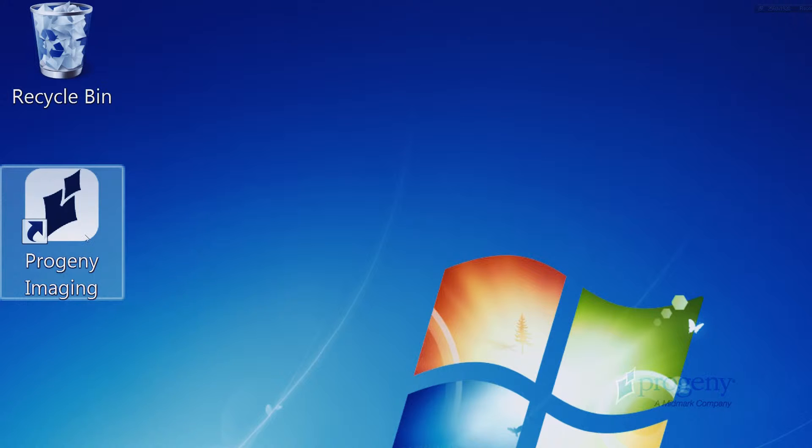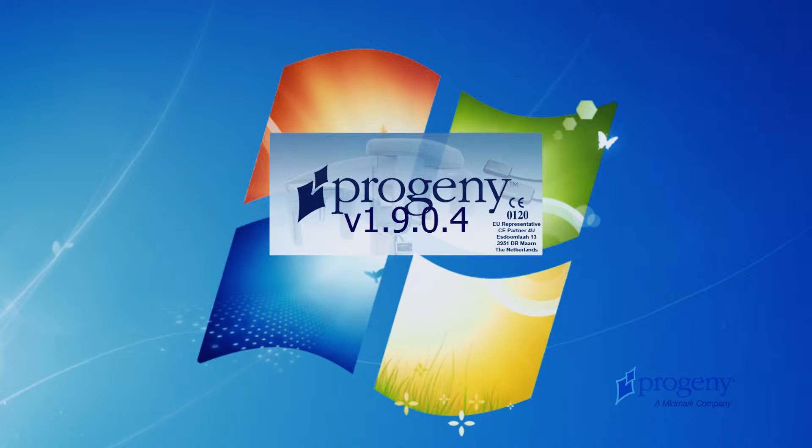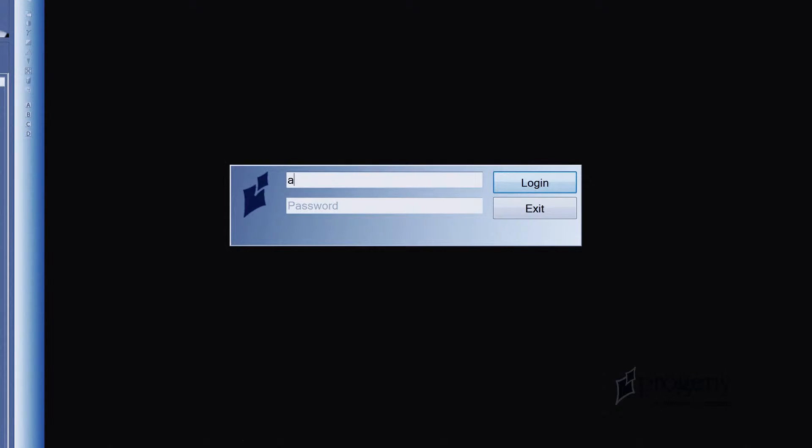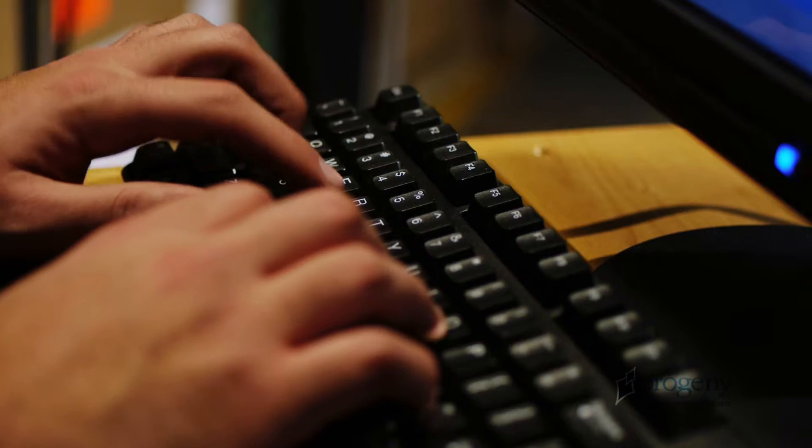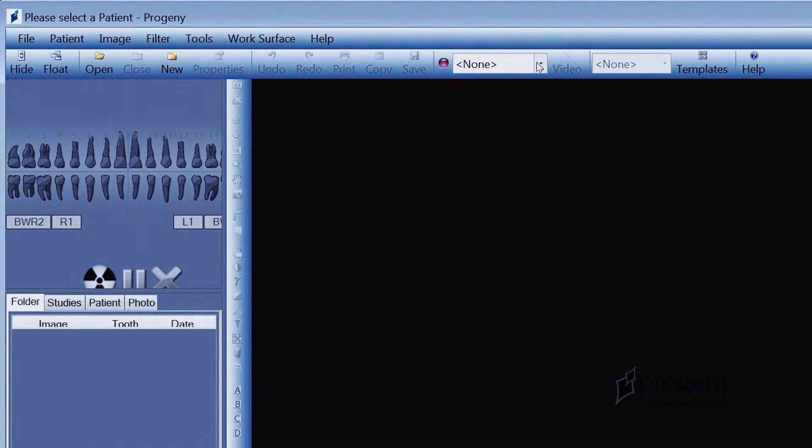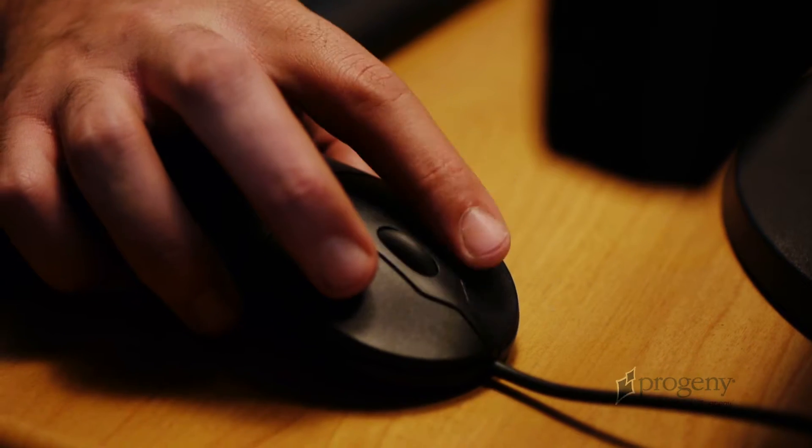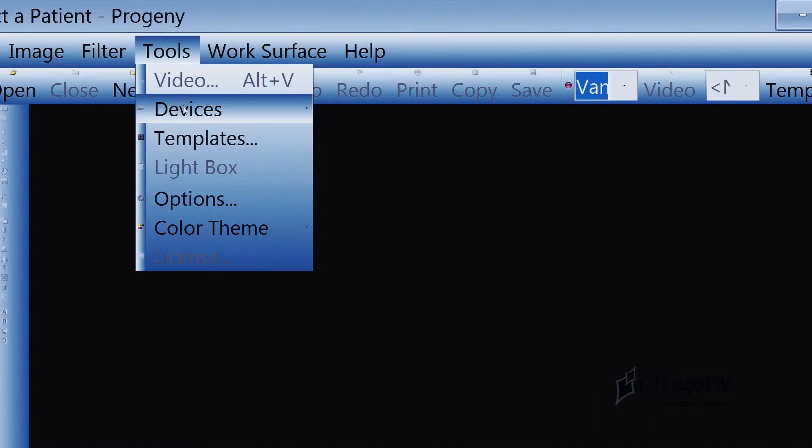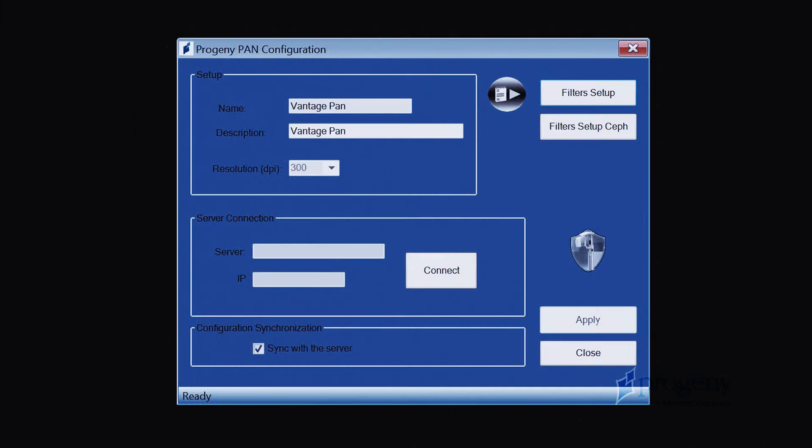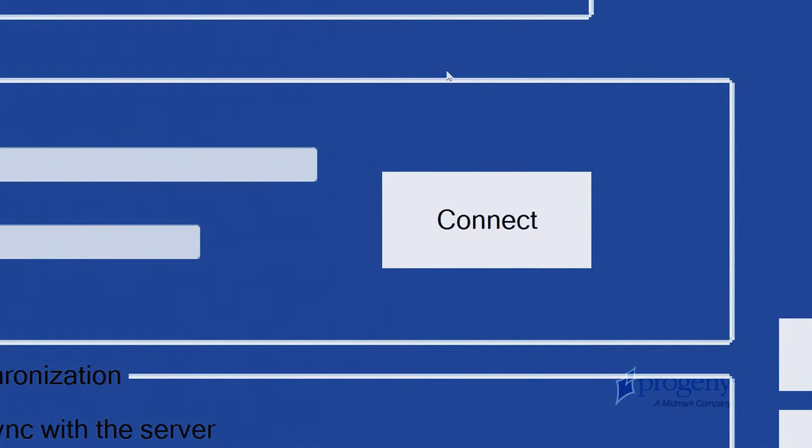On the workstation, open the Progeny Imaging software by clicking on the desktop icon. Enter Administrator for the user name and leave the password field blank. Verify that Vantage Pan is selected in the Device drop-down menu. In the top menu of Progeny Imaging, browse to Tools, Devices, Device Configuration.